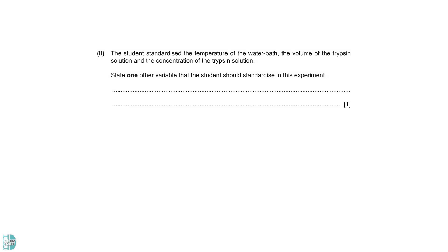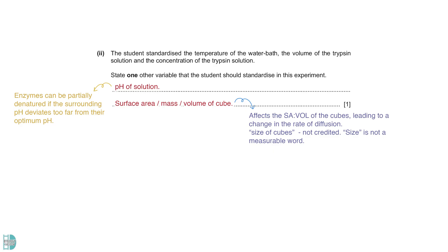Part 2 wants you to state one other control variable apart from temperature and enzyme concentration. The pH of the solution should be standardized as an enzymatic reaction is affected by pH change. An enzyme can be partially denatured if the surrounding pH deviates too far from its optimum pH. The surface area, volume and mass of cubes should also be standardized. These factors can affect the surface to volume ratio of the cubes, leading to a change in the rates of diffusion. Note that the size of cubes would not be credited as size is not a measurable word. Lastly, the substrate concentration must be kept constant for all tests. So, each cube must contain the same concentration of collagen.